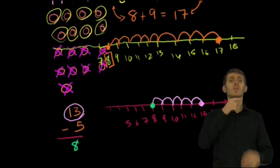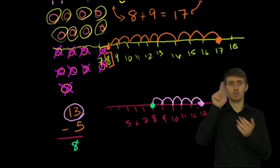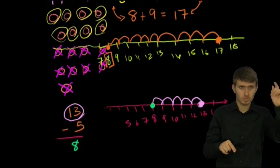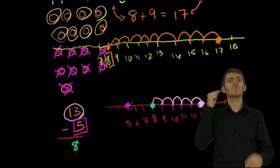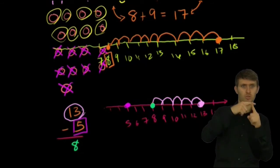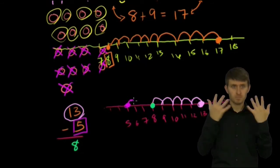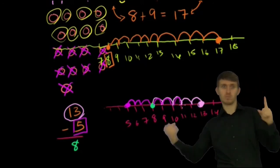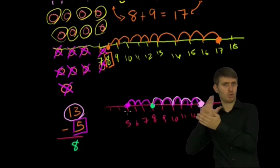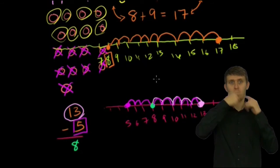Now, another way we could have thought about that, I plotted where 13 is. I can plot where 5 is. I could say, look, this is 5. 5 is right here on my number line. What do I have to add to 5 to get to 13? Let's see, I have to go 1, 2, 3, 4, 5, 6, 7, 8. I have to add 8 to 5 to get to 13.